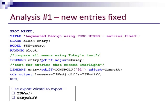For the first analysis, I'm going to use the MIXED procedure in SAS, assuming that our entries are fixed. We need a class statement to indicate that block and entries are both class variables. In the model statement with PROC MIXED, you only include your fixed effects, so the model statement is: 1000 seed weight equals entry. In this case, blocks are our random effect. Since the entries are all fixed, we don't really need to distinguish between our checks and our new entries at this point.